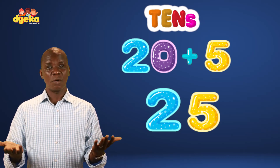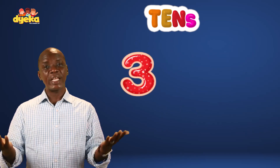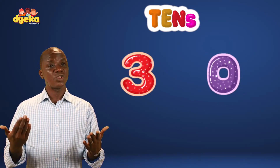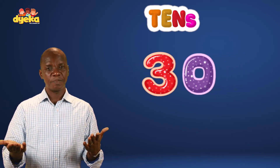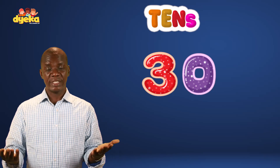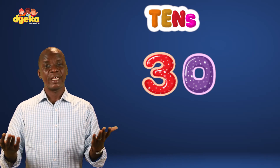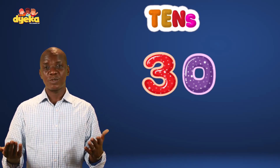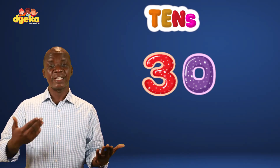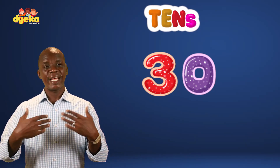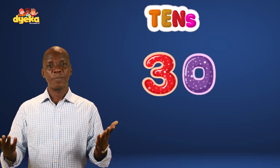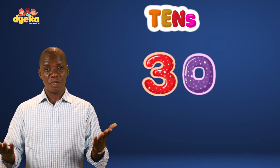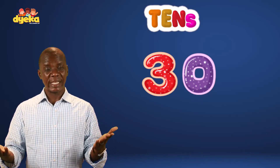Let's look at another number: 3 and 0, that is 30. Identifying 30 is pretty easy. All we have to do is look at 3 and 0 and that gives us 30. That is how to identify a number in tens.